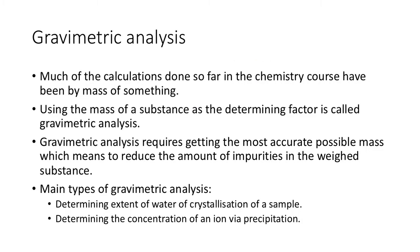Gravimetric analysis is effectively calculating something about a mass. If you're using the mass of a substance as a determining factor in an experiment to find how much there is, it's called gravimetric analysis because it's gravity based. Gravimetric analysis requires getting the most accurate possible mass, which means we need to reduce the amount of impurities in the weighed substance. The two main types are water of crystallization and precipitation.